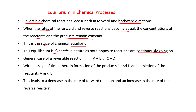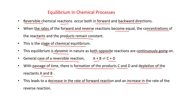The meaning of 'dynamic' is that both opposite reactions are continuously going on without any change in the composition of the mixture. If we consider a general case of a reversible reaction A + B converting into C + D, with the passage of time there is formation of products C and D and depletion of reactants A and B. Initially concentrations of A and B are more, and as the reaction proceeds, concentration of C and D increases while concentration of A and B decreases. This leads to a decrease in the rate of the forward reaction and an increase in the rate of the reverse reaction, since rate depends on concentration.